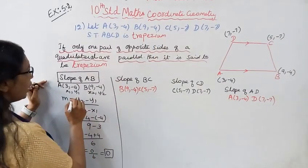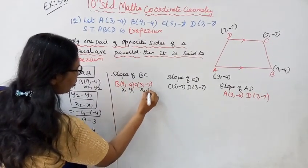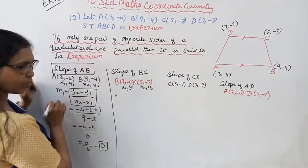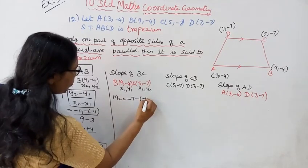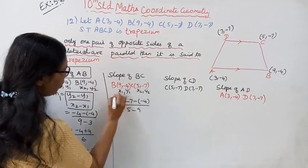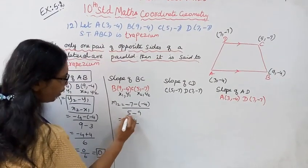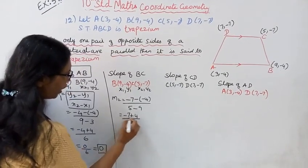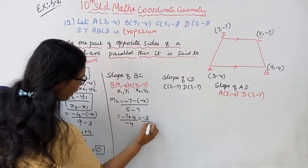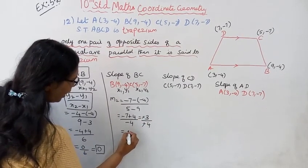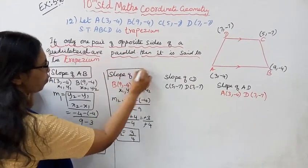Now slope of BC: points B(9, -4) and C(5, -7). Using y2 minus y1 by x2 minus x1: (-7 minus (-4)) divided by (5 minus 9) = (-7 + 4) / (5 - 9) = -3 / -4 = 3/4. So M2, slope of BC, equals 3/4.